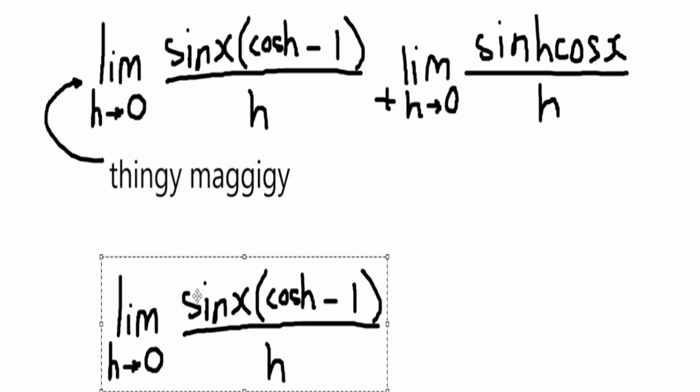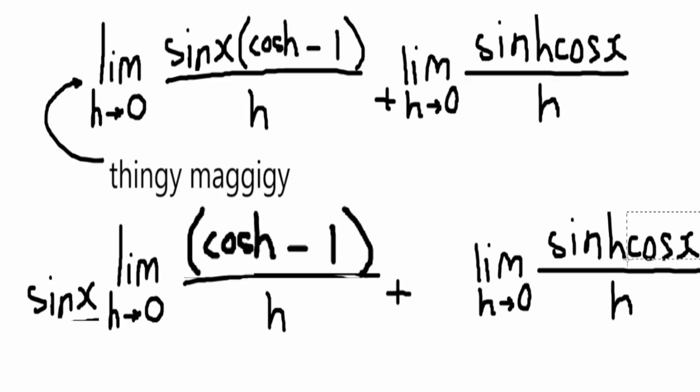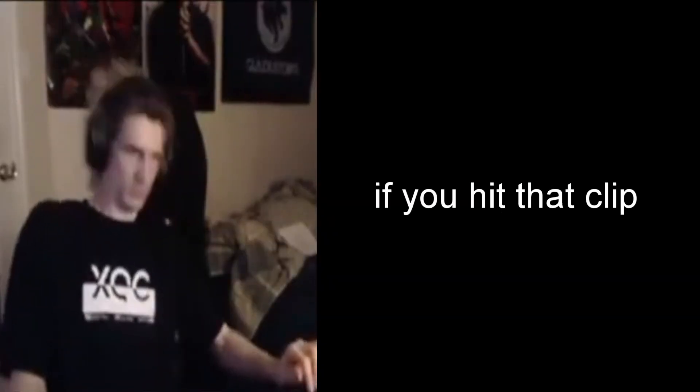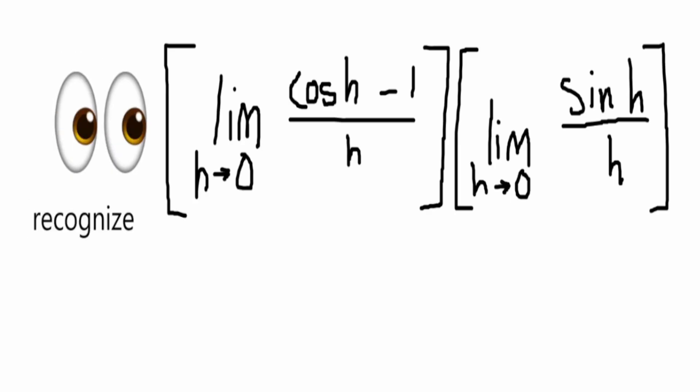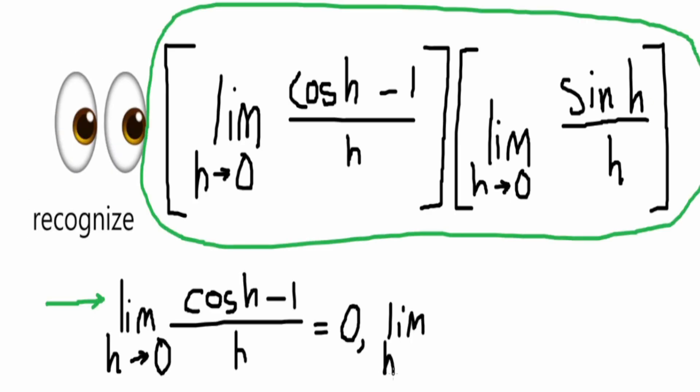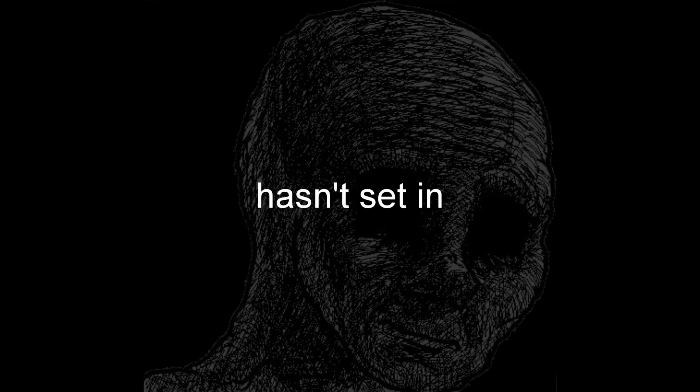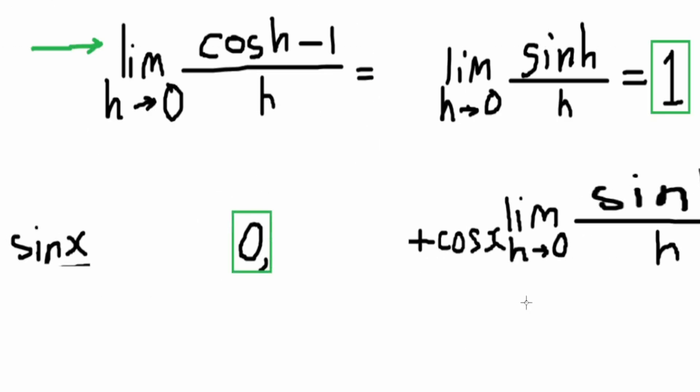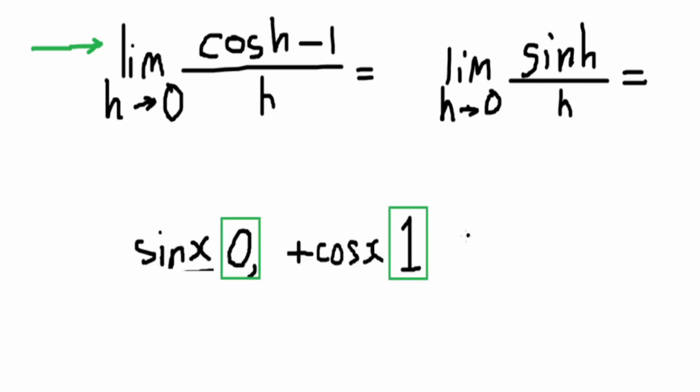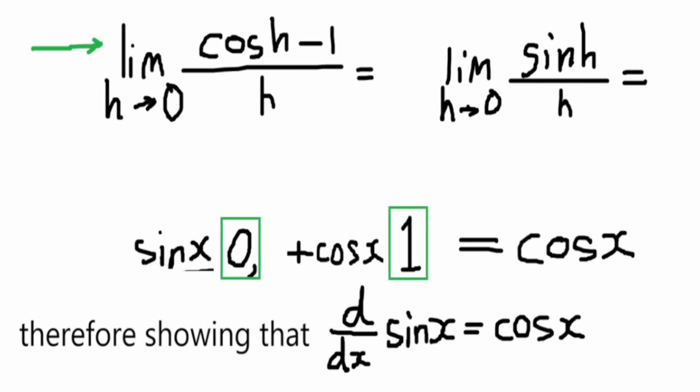This thingy-majiggy now allows us to move the sine and cosine coefficients to the left of the limits. Hmm, chat, if you heard that clip earlier, you'd recognize these limits and fractions to be the first ones I covered in this section. I'm hoping the dementia hasn't set in, because we can actually substitute in 0 for the first one, and 1 for the second. This leaves us with cos x, thus showing the derivative of the sine x is cos x.